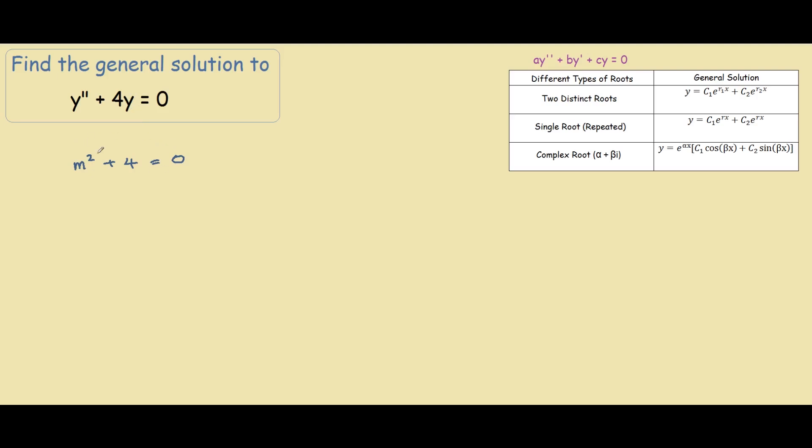And this is our characteristic equation. So if we solve this, we get m² equals to negative 4. Therefore m equals to plus minus square root of negative 4. And as you know, the square root of 4 is 2, and the square root of negative 1 is i. So we actually have a complex root in this differential equation.